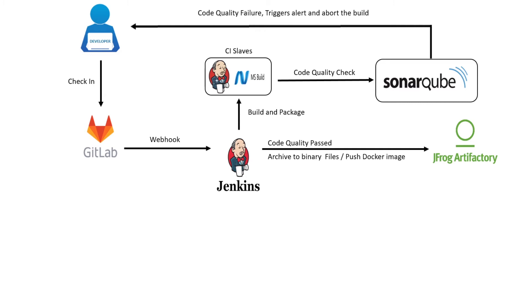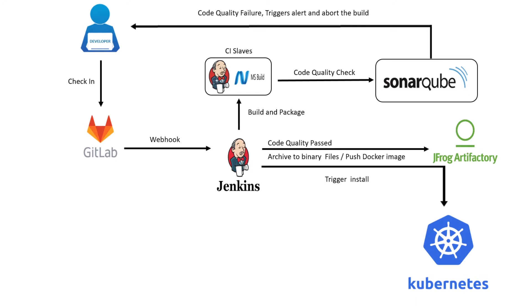The Docker image will be built using the Docker file and pushed to the JFrog container registry. In the final stage, Jenkins will deploy the application using the Istio service mesh, which will perform the following tasks.